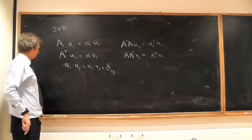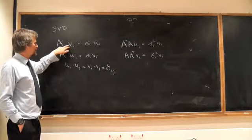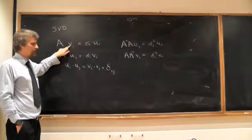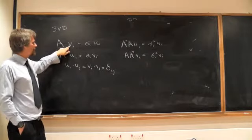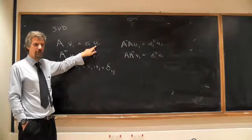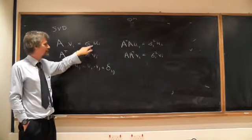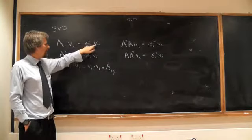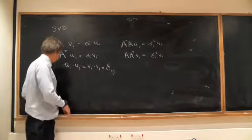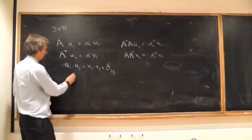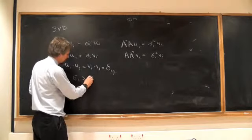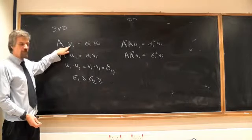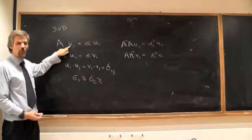The point is, that if A is the forward problem, then you can express the unknown, the image, in our case the voltages, in an orthogonal family of functions. And you can express the data, in our case the voltages, in an orthogonal family of functions. If we've got electrodes, they actually are just vectors. And what this tells you is that if you put in the i-th component here, then that comes out multiplied by a number sigma_i. And these sigma_i can be chosen to be non-negative, and it's convenient to write them in decreasing order.